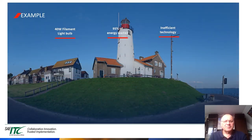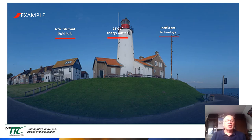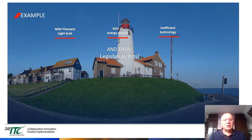Here is an obsolescence example given on a lighthouse. For 100 years a lighthouse was using a 40-watt filament light bulb. 95% of energy is wasted — transferred into heat instead of light. It is an inefficient technology. The 40-watt bulb was used because it is a more reliable type than 75, 100, or 150 watt. But after many years, legislation hits: governments decided it was too inefficient and mandated that 40-watt filament light bulbs could no longer be produced.